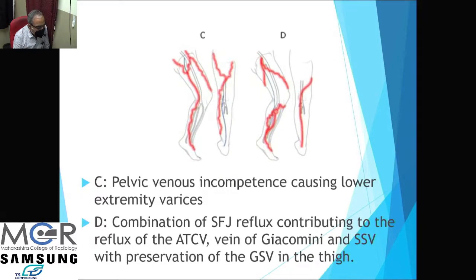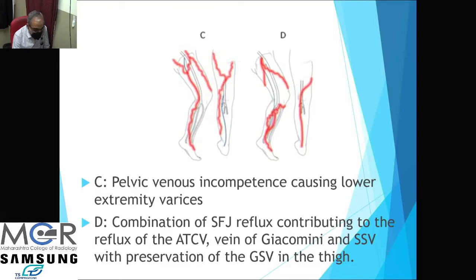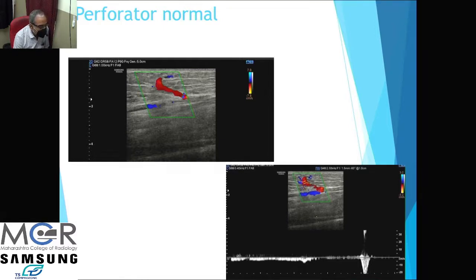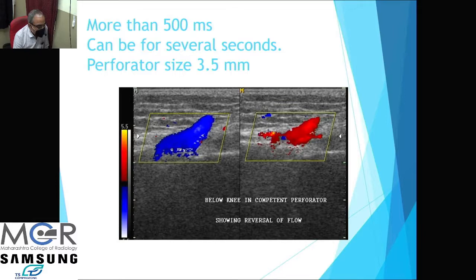Rarely, pelvic venous incompetence causes lower extremity varices. When there is no incompetence at the two junctions and the superficial veins appear normal, look for a pelvic source. Sometimes there is a combination of incompetence and varicosities. A normal perforator on Doppler shows flow going from superficial to deep, which augments with distal compression and then stops — no reflux. An abnormal perforator shows reversed direction, from deep to superficial. Perforator size greater than 3.5 mm is taken as abnormal.